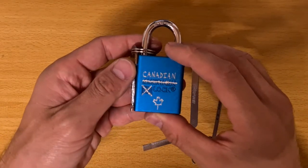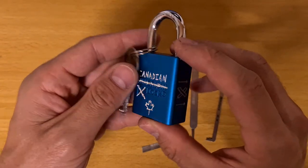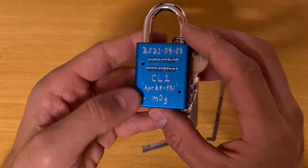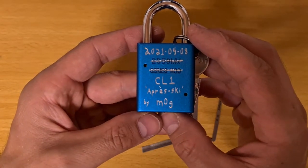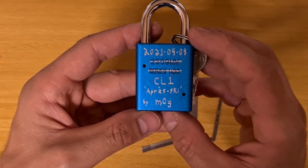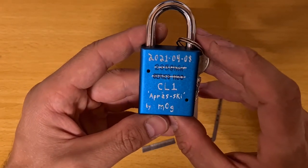Hello, here is Moon and I have a Canadian lock. This is a challenge lock made by Mark called Après Ski. That's his first one. It was apparently around for a few months already.